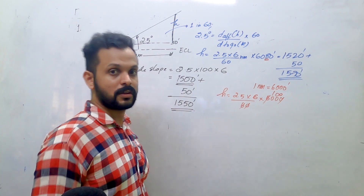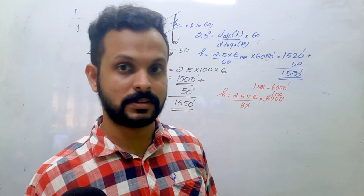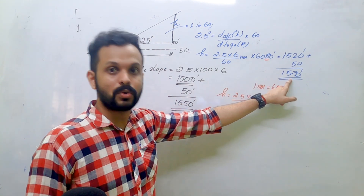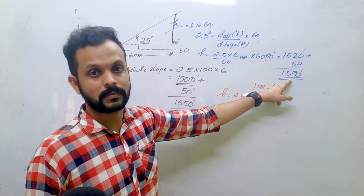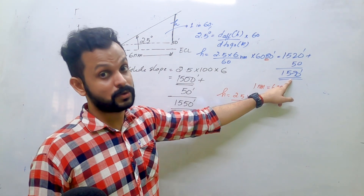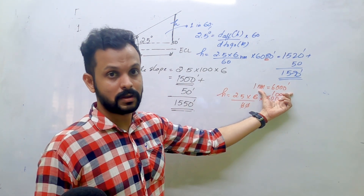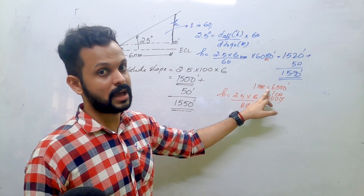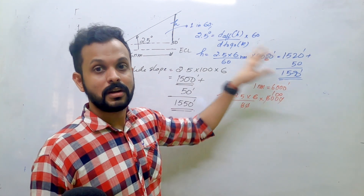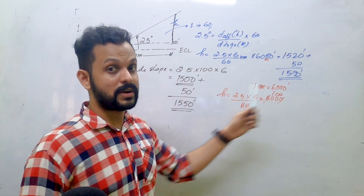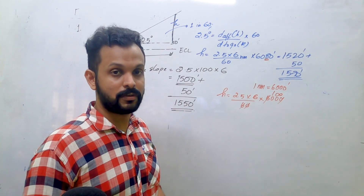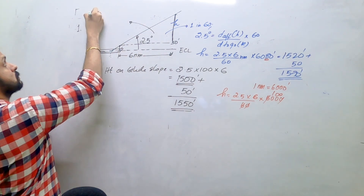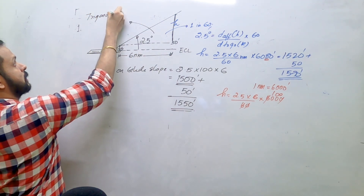Look at the options and figure out what the answer is. If you have options like 1550 and 1570, which is more correct? 1570 is more correct because 1550 uses an approximation and therefore has more error. Go with 1570. Now, if you want a truly accurate answer, even the 1/60 method is an approximation — you need to apply trigonometry.